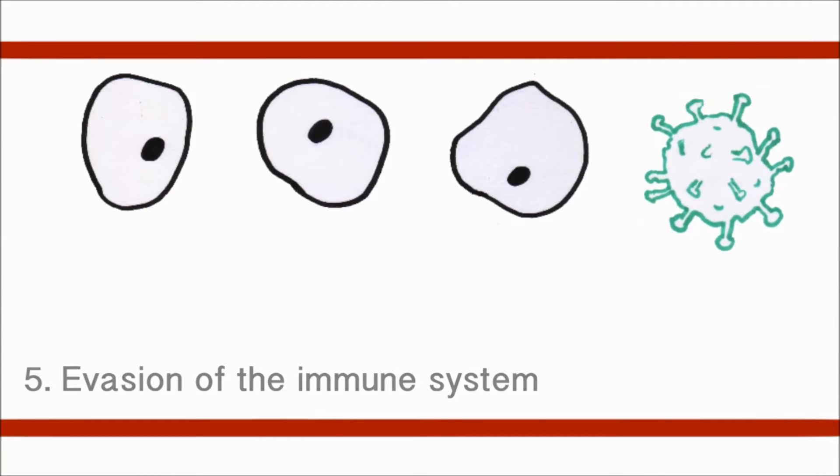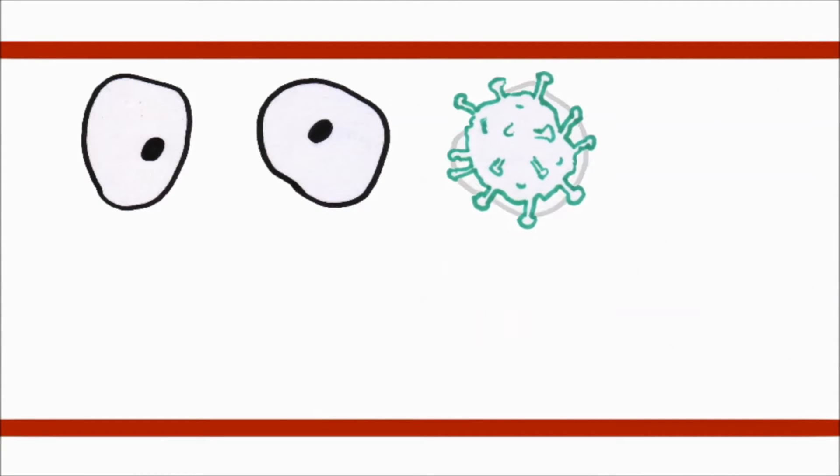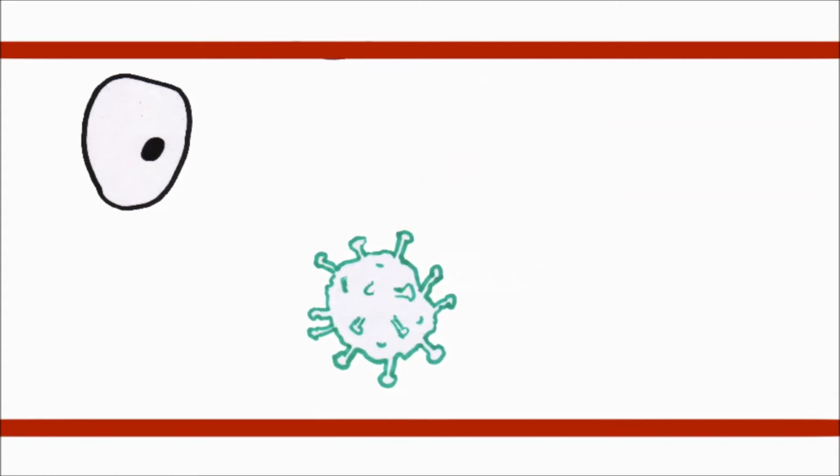Number five, the immune system is able to successfully destroy some cancer cells, however others are able to escape its detection. The cancer cells not eliminated continue to divide and grow, taking over areas of the body.